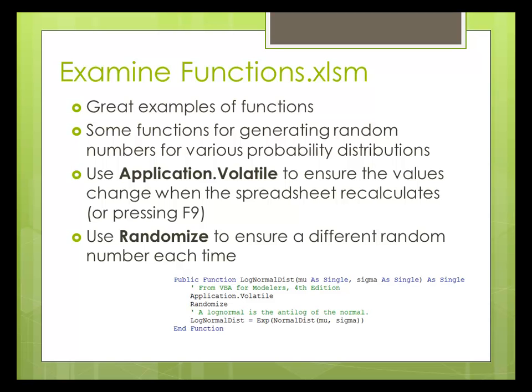We didn't get a chance to really look at the examine functions.xlsm file from Chapter 10. I would encourage you to do that — it's got some great applications, especially if you're going to be working with random numbers, which is very important for any kind of modeling or financial analysis. It's important to use application.volatile when you want to generate random numbers on a spreadsheet that will recalculate every time something changes, or if you press F9. You can also use the randomize function to ensure that you'll get a different random number every time you run your subroutine.